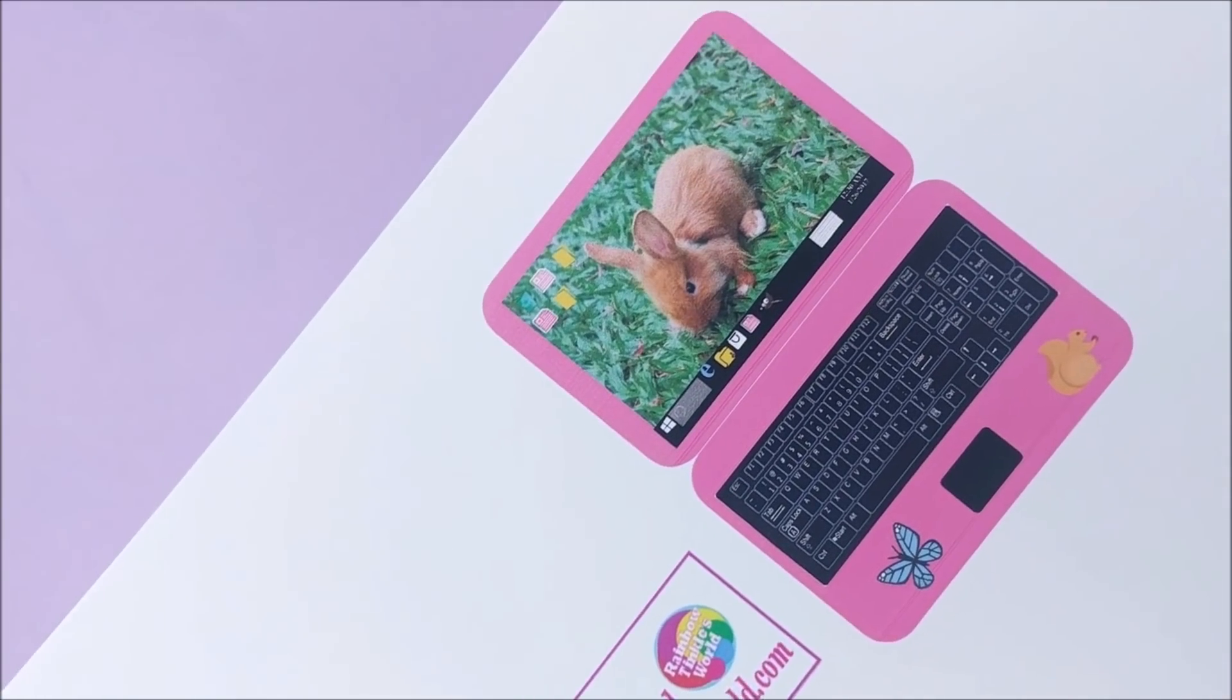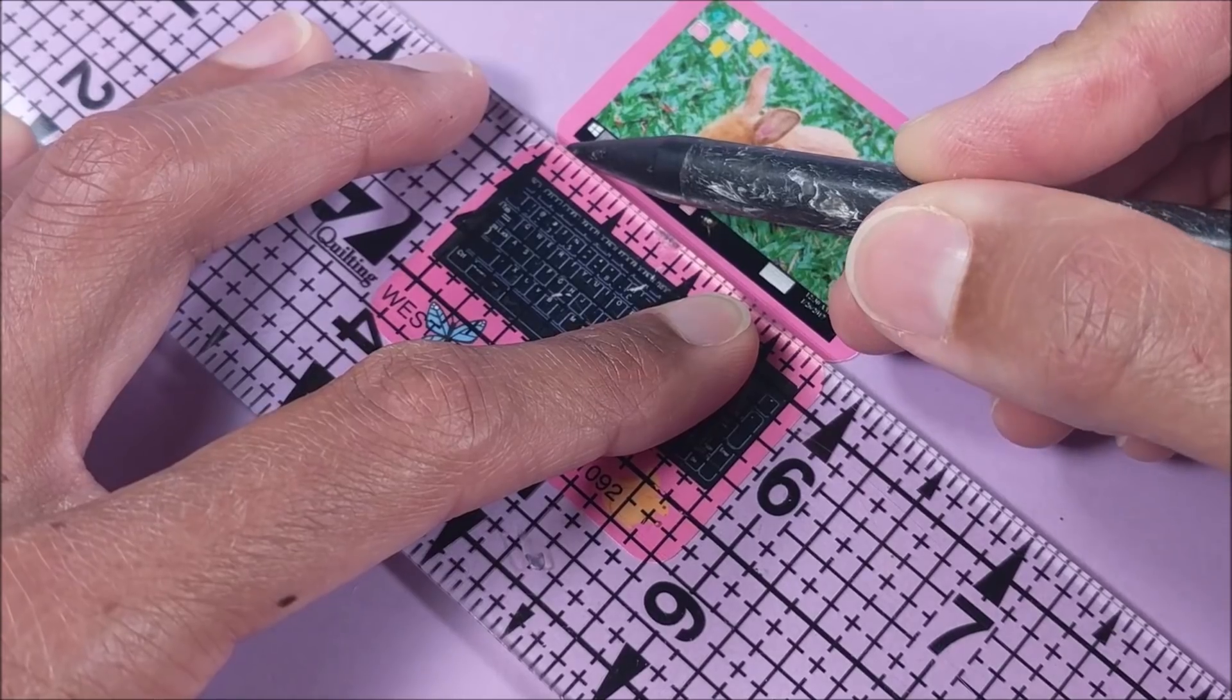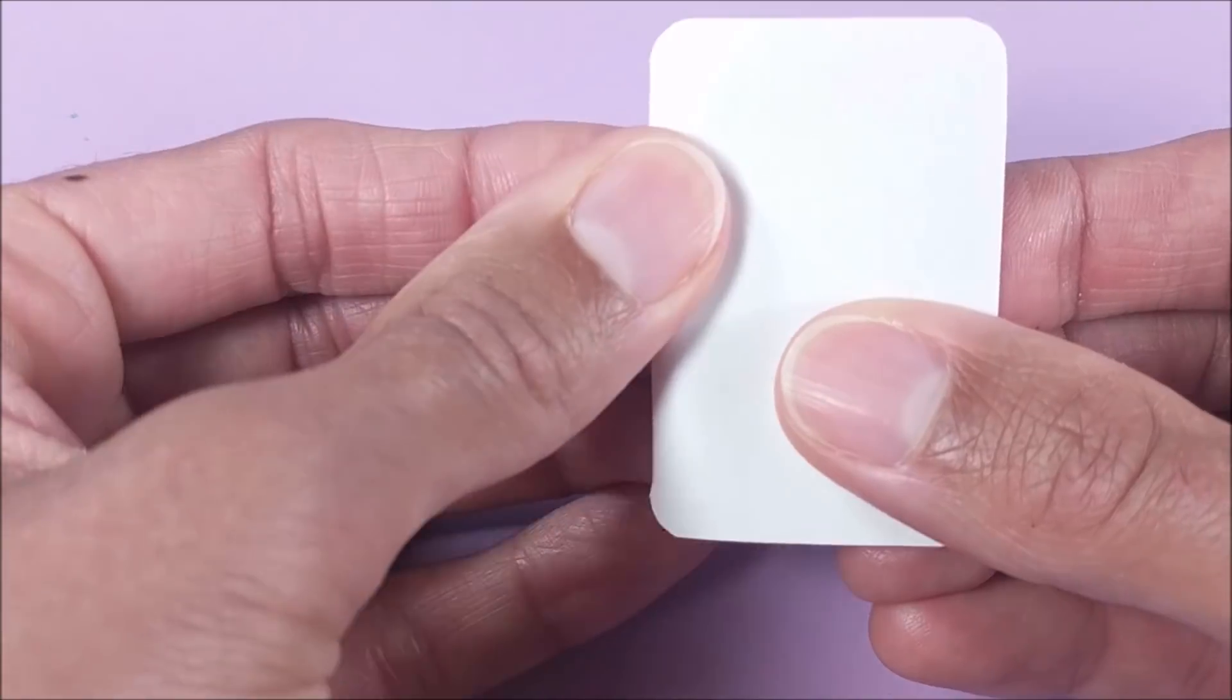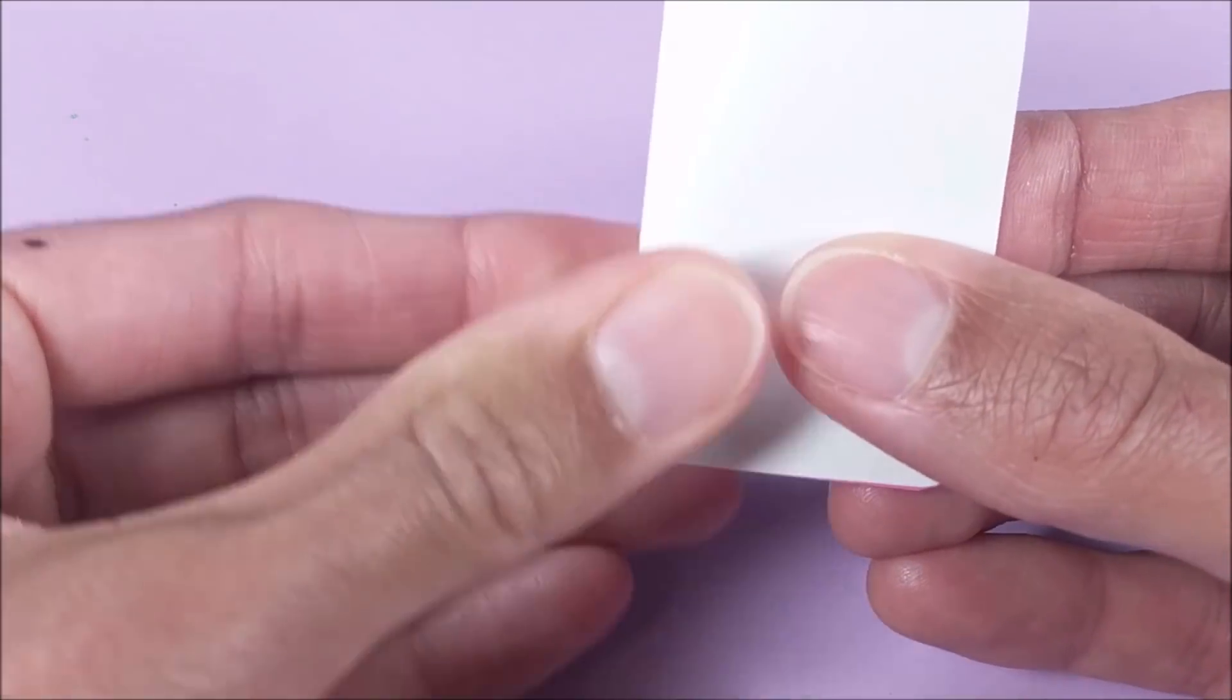Next, I print the laptop on glossy photo paper. You can find the printable on my website, rainbowtinklesworld.com. Score and fold, then glue to craft foam.